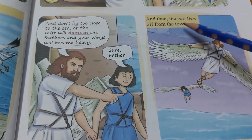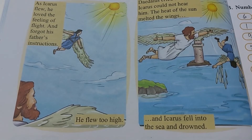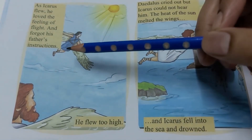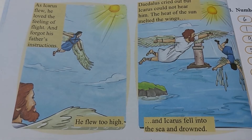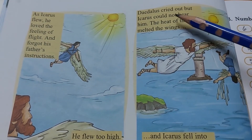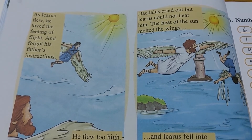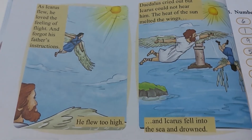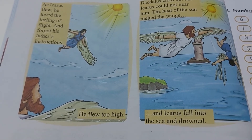Icarus said, 'Show father,' and then the two flew off from the tower. As Icarus flew, he loved the feeling of flight and forgot his father's instructions. He flew too high. Ab jab Icarus ne urna start kia to usse urnay ki feeling itni achi lagi ki woh apne father ke instructions ko bhool gaya aur woh bahut oochi udd gaya. Daedalus cried out but Icarus could not hear him. The heat of the sun melted the wings, and Icarus fell into the sea and drowned — matlab dub gaya.